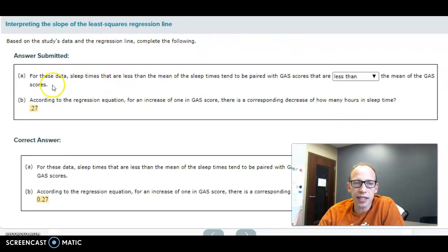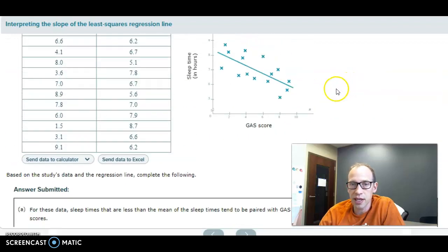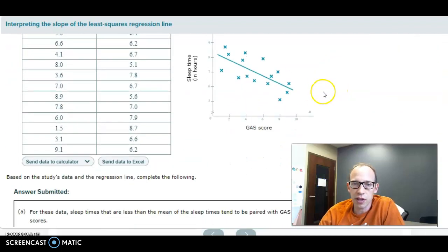So when they ask us: for these data, sleep times that are less than the mean tend to be paired with GAS scores that are blank. Where are the scores that are less than the mean? We can think of the mean as somewhere halfway here in the sleep time, so most of the ones below that mean are over here. What are those in terms of the anxiety?